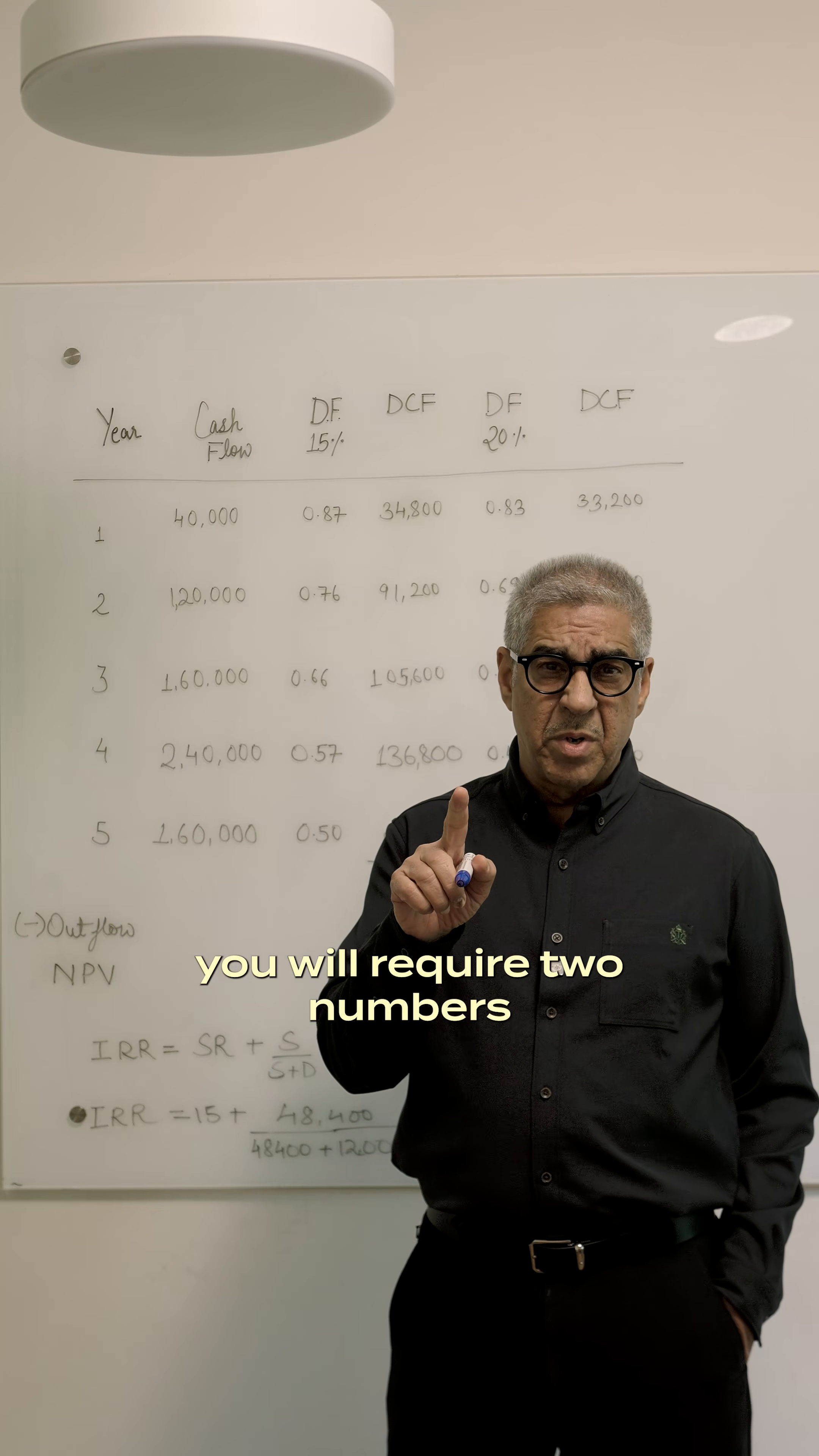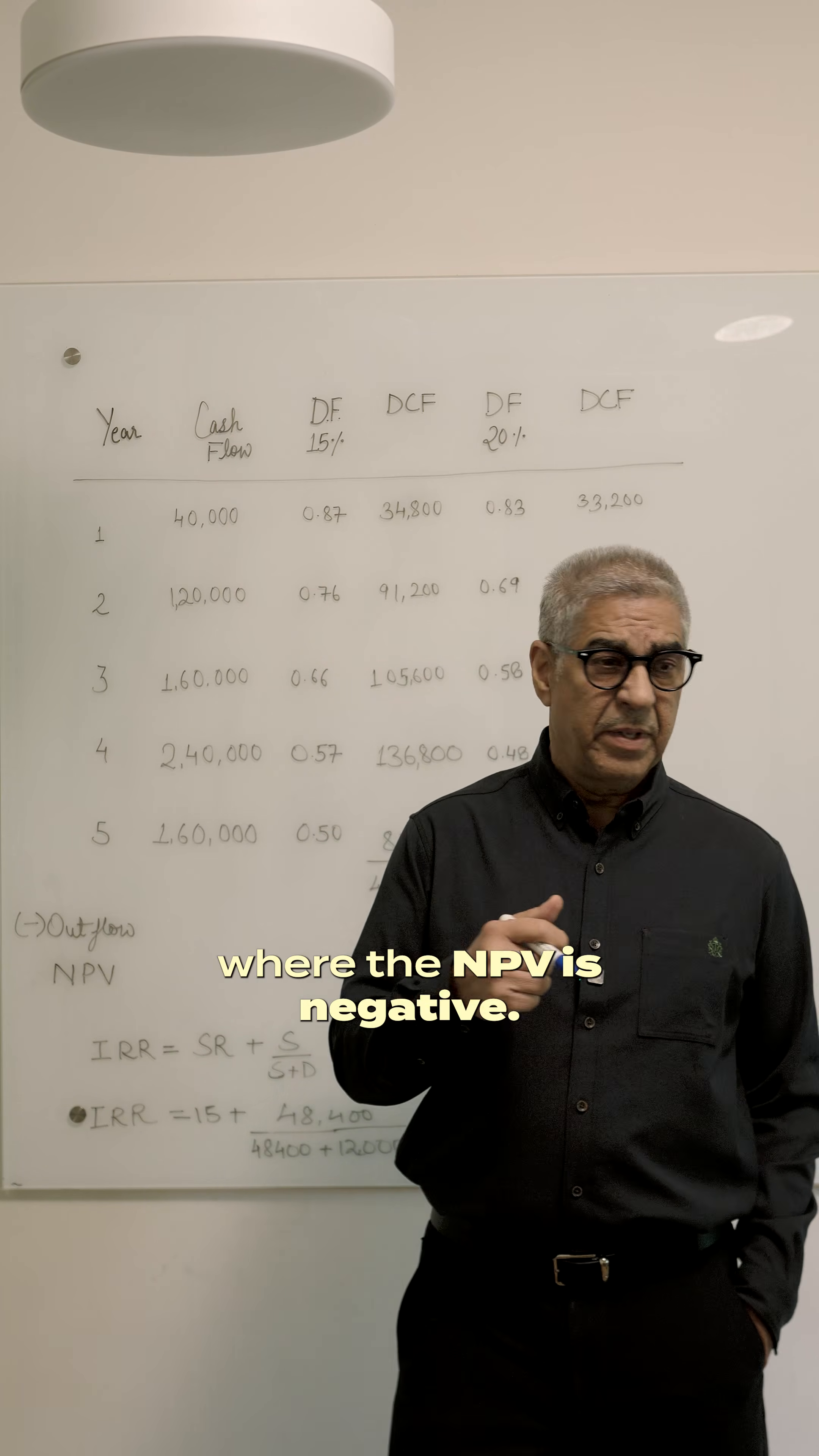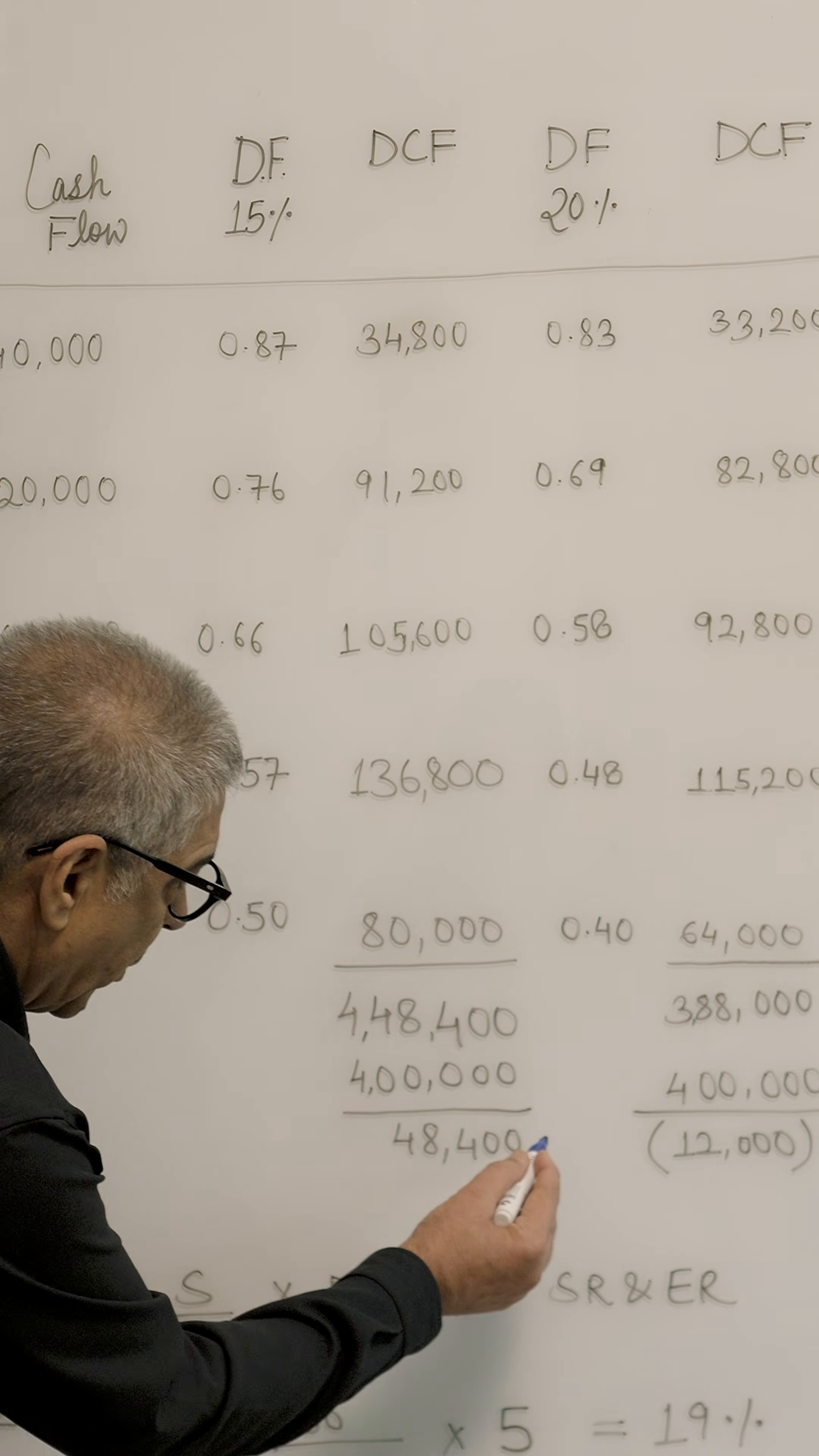If I have to give you a formula for that, you will require two numbers. One discounting rate where the NPV is positive and the other where the NPV is negative. In this example, let's assume these are the cash flows from the project. You first discount it using a 15% rate and you arrive at a positive cash flow.